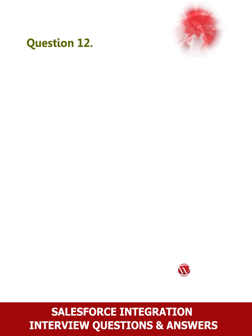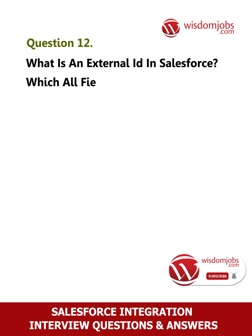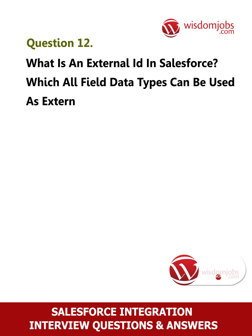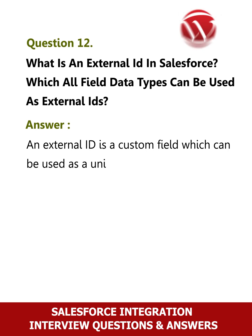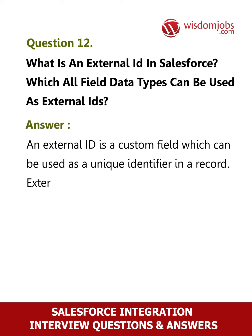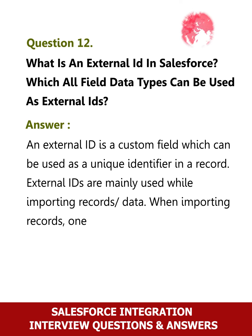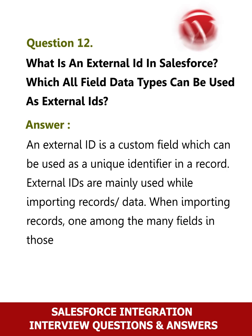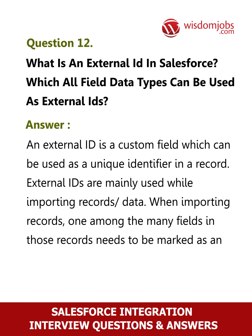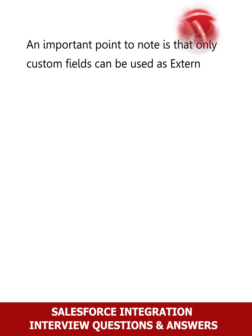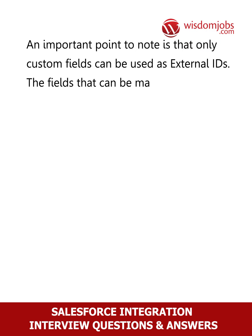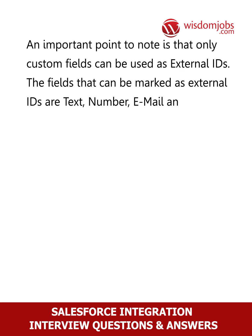Question 12: What is an external ID in Salesforce, and which field data types can be used as external IDs? Answer: An external ID is a custom field which can be used as a unique identifier in a record. External IDs are mainly used while importing records. One among the many fields in those records needs to be marked as an external ID. Only custom fields can be used as external IDs. The field types that can be marked as external IDs are: Text, Number, Email, and Auto Number.